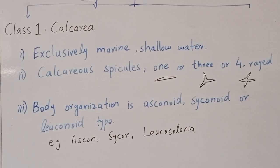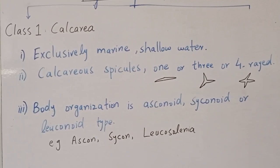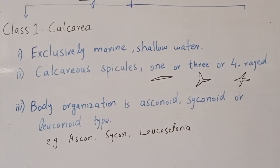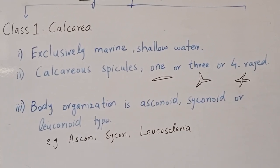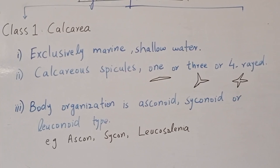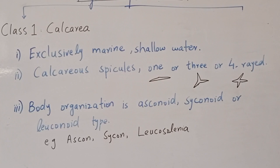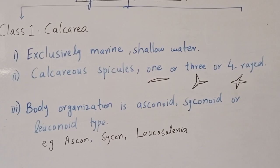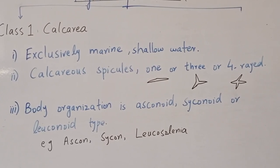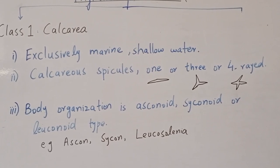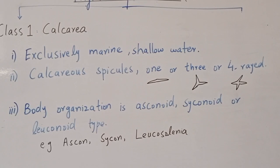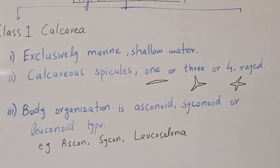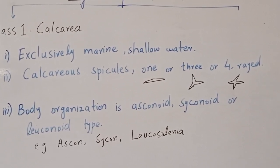The first class is Calcarea. As the name suggests, the spicules are made of calcium carbonate. Members of Calcarea are exclusively marine — all are found in seawater, none in freshwater — and they are found in shallow waters, not deep water. The spicules may have one ray (monoaxon), three rays (triaxon), or four rays.